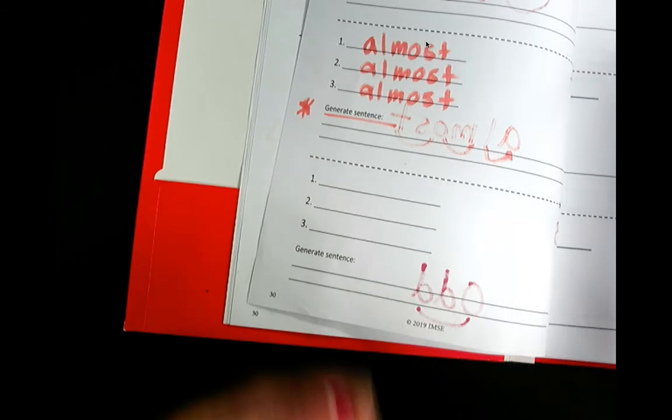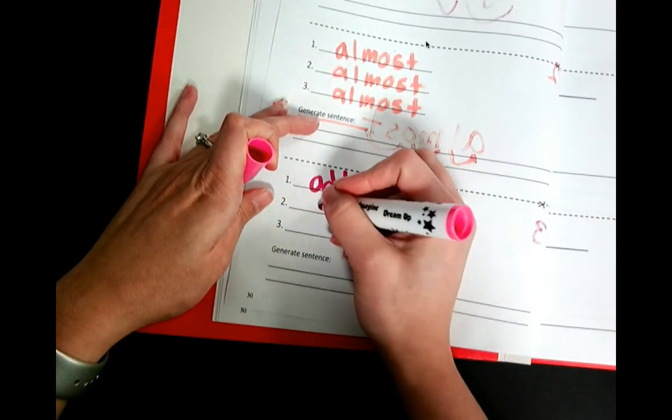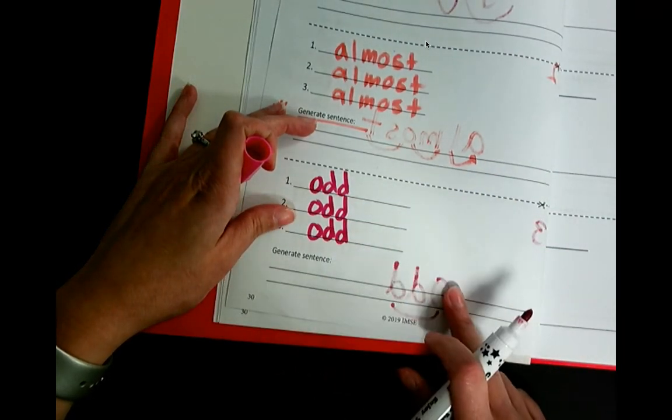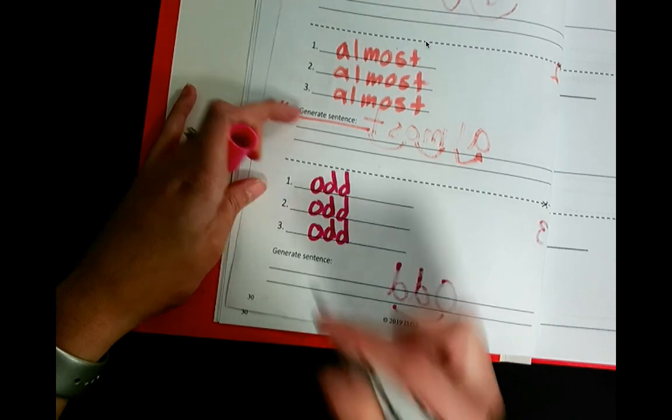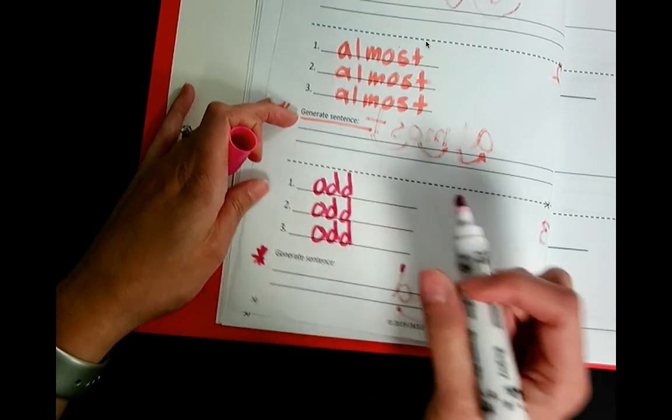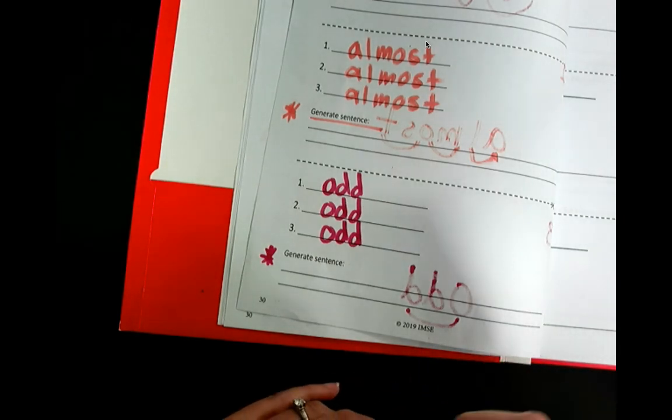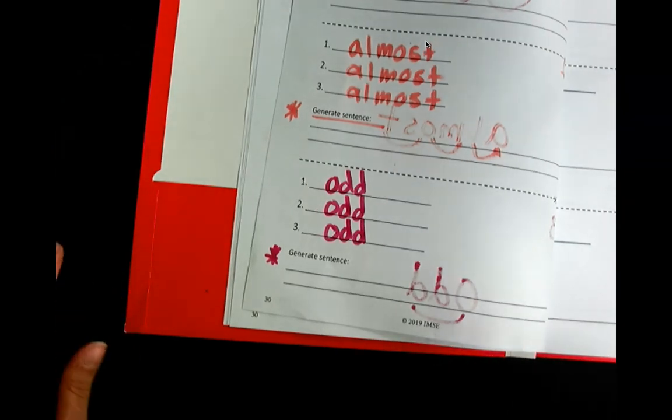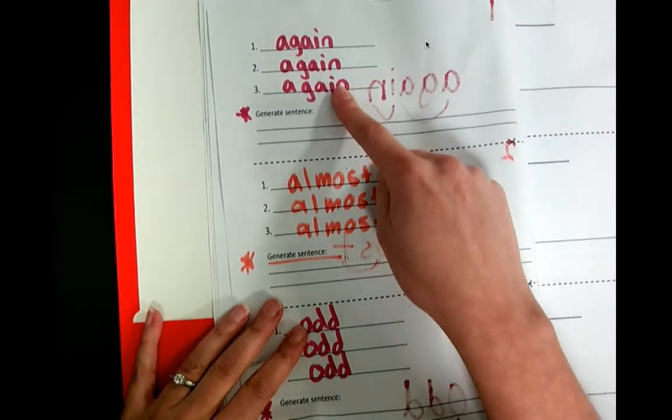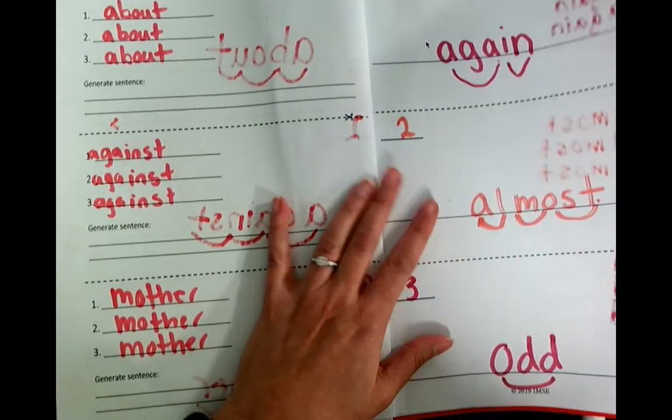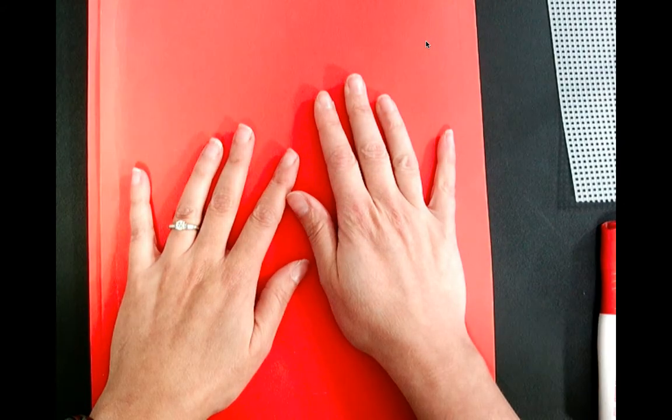And then go ahead and generate a sentence for me. Odd. I thought that my friend was odd because he didn't like chocolate. Odd. Again, almost, odd. Now it's time for you to share your sentence on our discussion board. So don't put these away yet. I want to see those sentences.